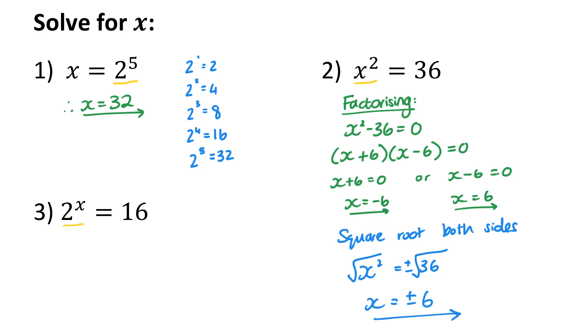Now in the third example, x is the exponent. There isn't a way to undo this equation. Rather, I'm going to use my knowledge of the powers of 2. If I go back to the list I made in the first question, you'll see that 2 to the power of 4 is 16. So I know that 2^x must equal 2^4. Now since the bases are identical, x must equal 4.